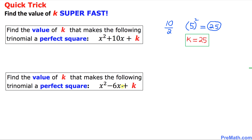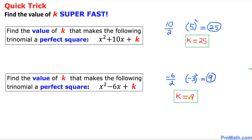Here is our next example. Let's look at the coefficient of x, the middle number, which is negative 6. Always divide this number by 2 — we are going to get negative 3. Then we square it, and that is going to give us positive 9. Thus k equals 9 is our final answer.